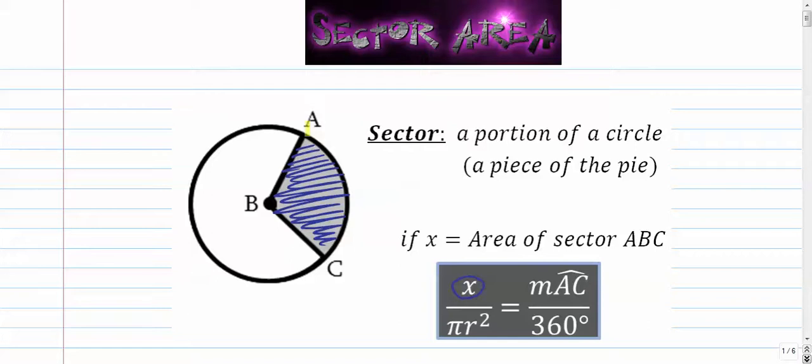Set that equal to the measure of the arc. When we say arc measure, we mean this thing in degrees. And remember, the arc is also the same as the angle. So this angle is the same as this arc. So that number will go right here and divide that by 360 degrees. So it's basically the portion of the circle divided by the whole circle is equal to a portion of the circle divided by the whole circle.